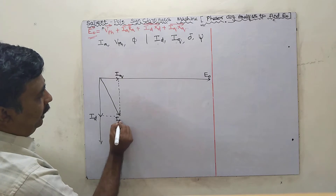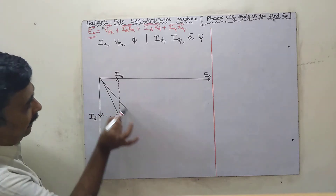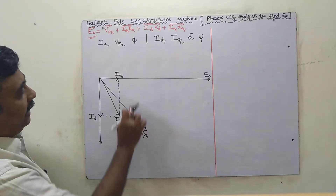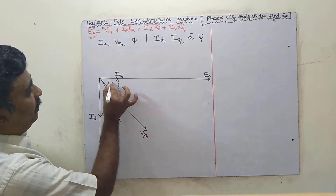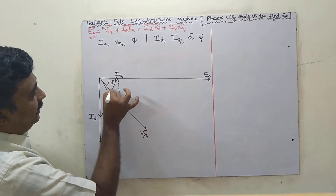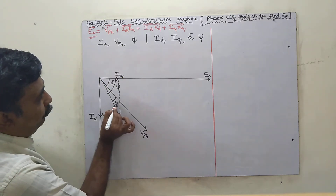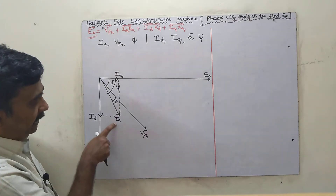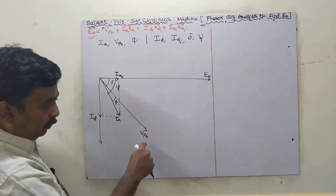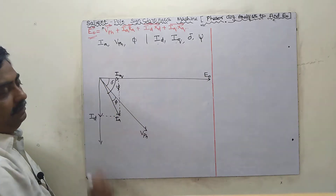For lagging power factor, the current will lag so the voltage will lead. This is V phase. The angle between E0 and V phase is called delta (power angle). The angle between E0 and IA is called psi. The angle between voltage and current is called phi. The angle between real voltage and real current is called phi, the angle between no-load voltage and rated voltage is called delta, and the angle between no-load voltage and armature current is called psi.